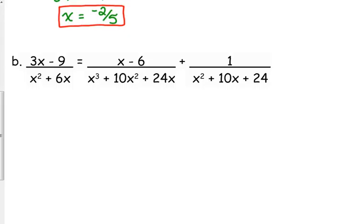3X minus 9 over X squared plus 6X. That first denominator has a GCF of X. So that leaves us with X plus 6. And I'm going to mark that out so I don't get confused. We got X times X plus 6.